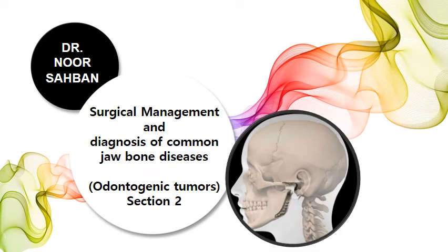Good morning students. Our lecture today is part 2 of odontogenic tumors. A quick refresher from the previous lecture: odontogenic tumors are tumors of the jaw and overlying soft tissue. They are derived from epithelial or ectomesenchymal remnants of the dental lamina. They are classified into benign and malignant tumors.